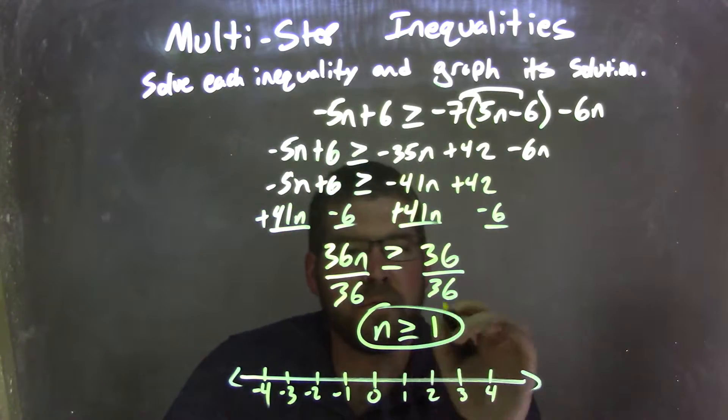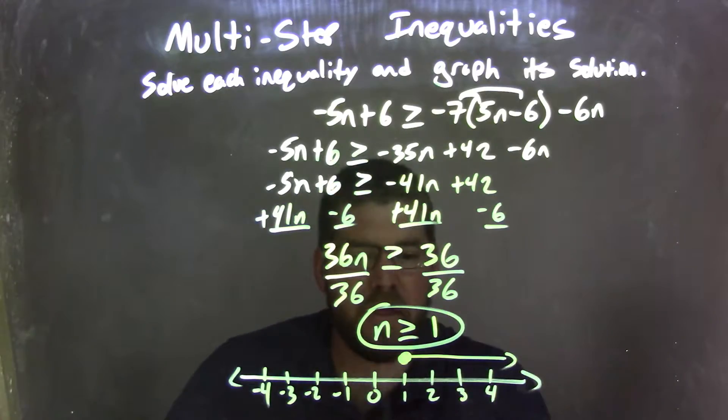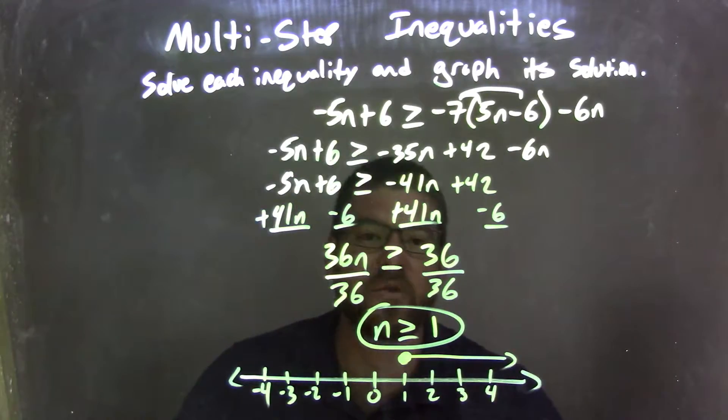Well, if n is greater than or equal to 1, I have a closed circle at 1 because it can equal that 1. And then I put my arrow to the right because we said n is greater than that as well. And so now we have a graph here that matches our final answer, which is n is greater than or equal to 1.